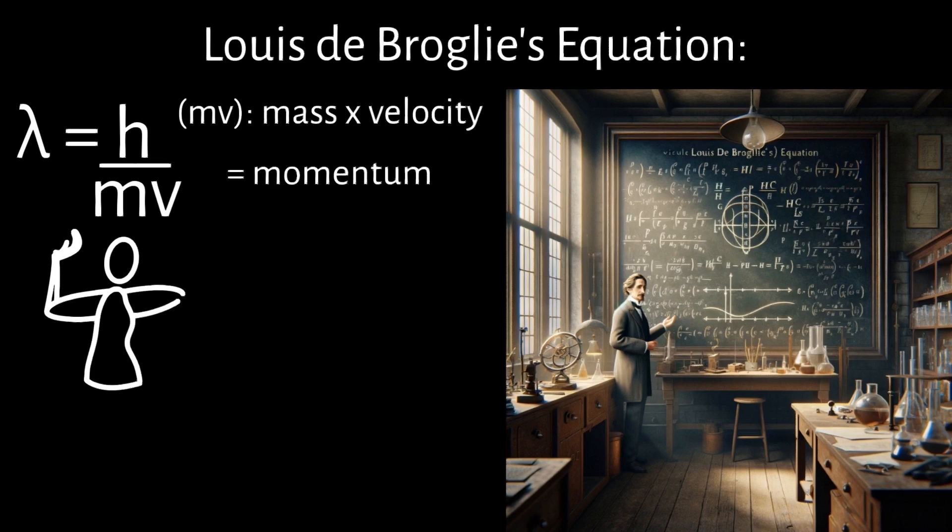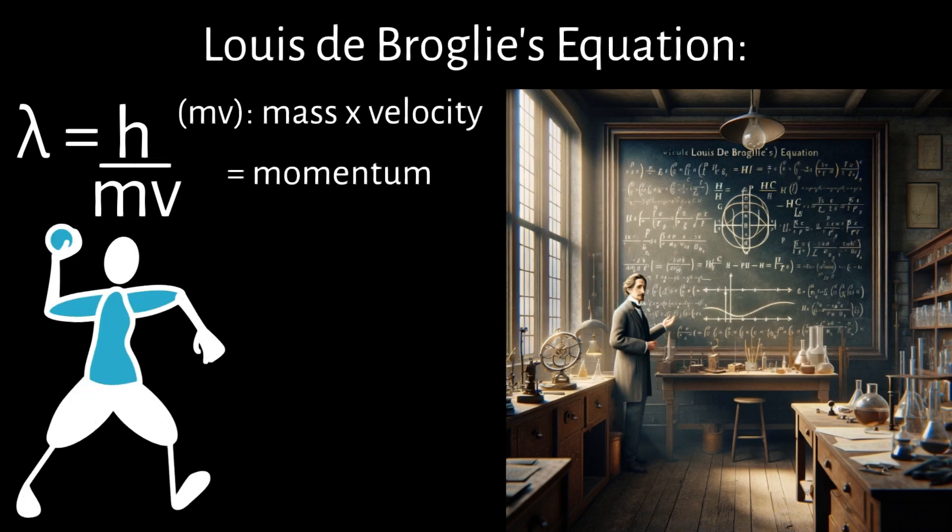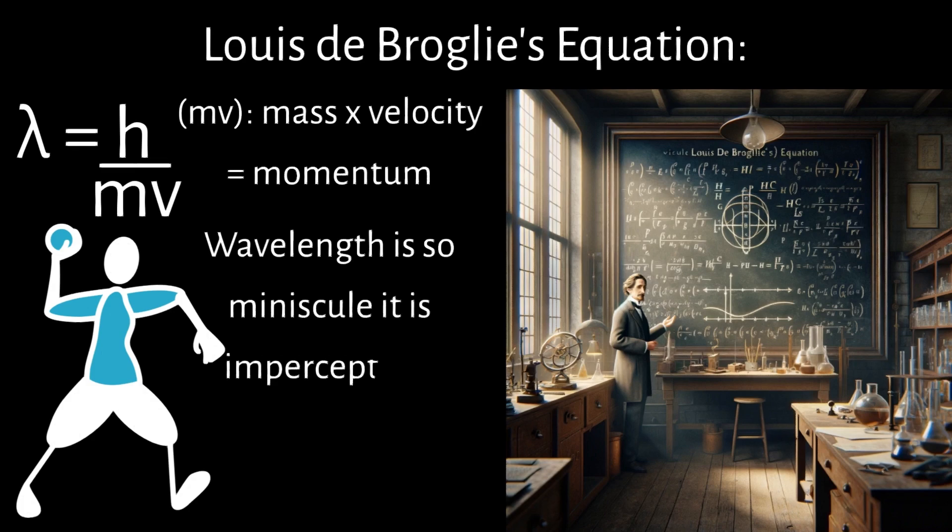Therefore, any matter, such as a baseball that is moving, has a wavelength, but due to the mass of most objects, the wavelength is so minuscule that it's imperceptible.